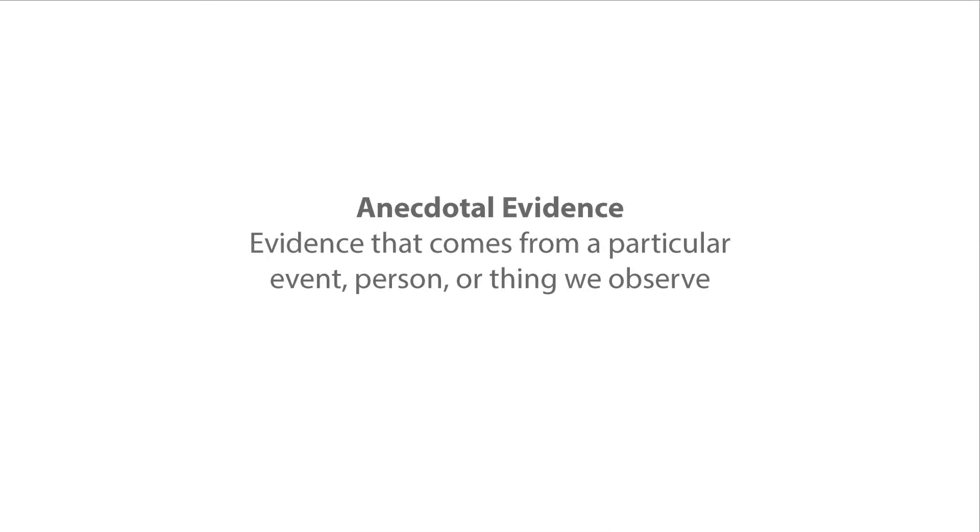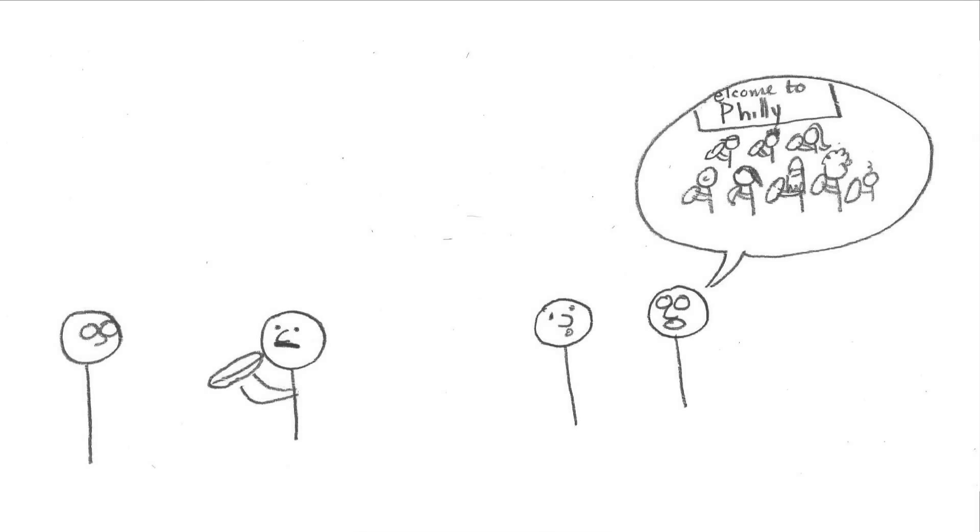Example 2: Anecdotal Evidence. Anecdotal evidence is evidence that comes from a particular event, person, or thing that we observe first-hand. In everyday conversation, a lot of the evidence that we give to each other is of an anecdotal character. For example, your friend might have taken a trip to Philadelphia and noticed that there's a bunch of people eating cheesesteaks, and decided that everybody in Philadelphia loves cheesesteaks.